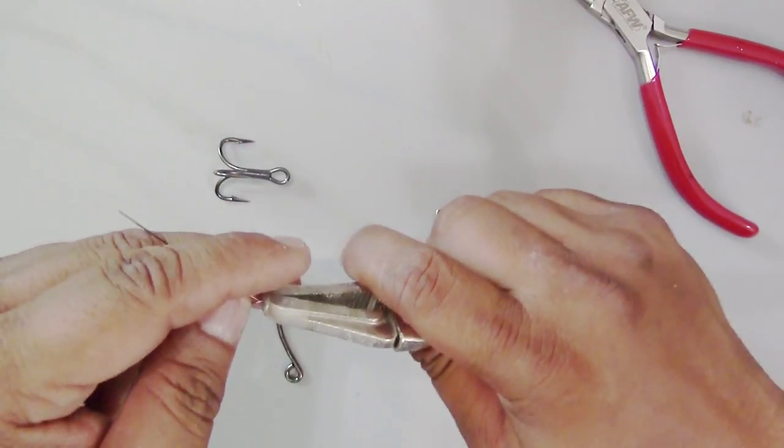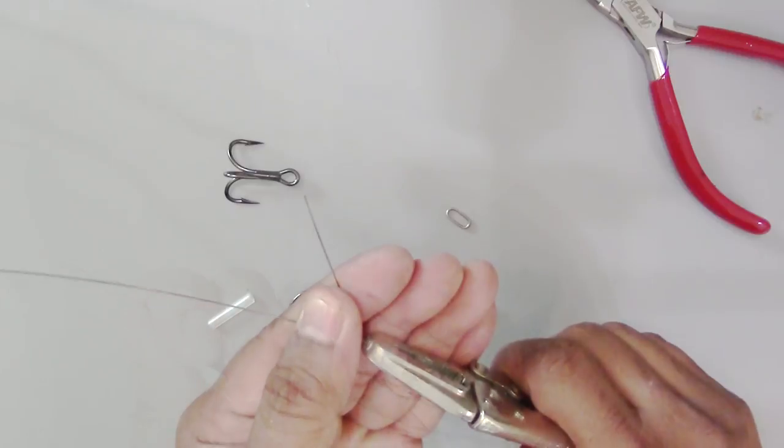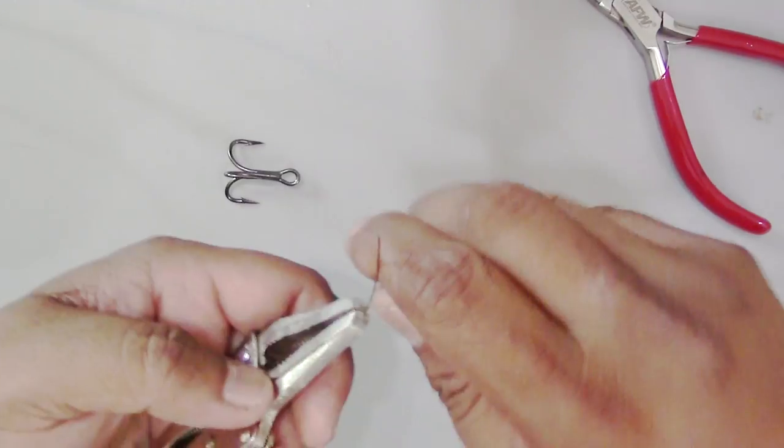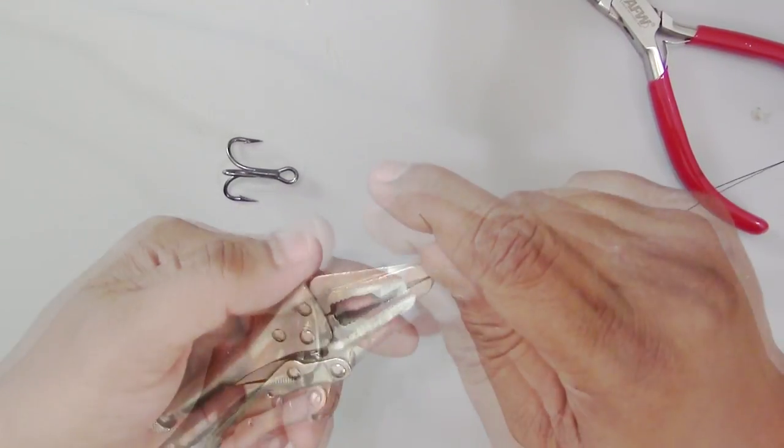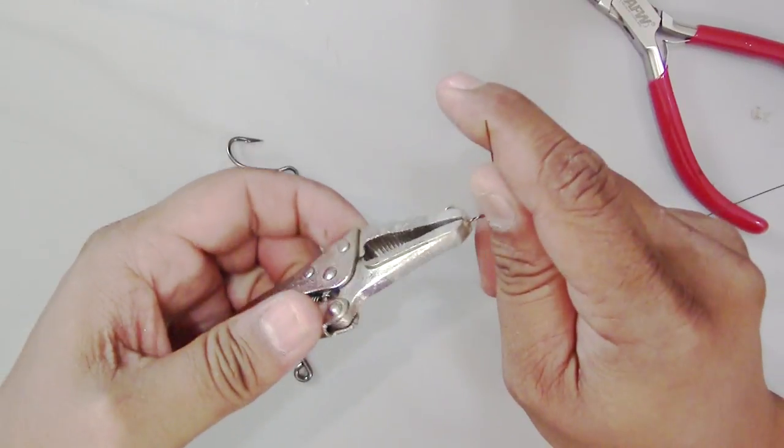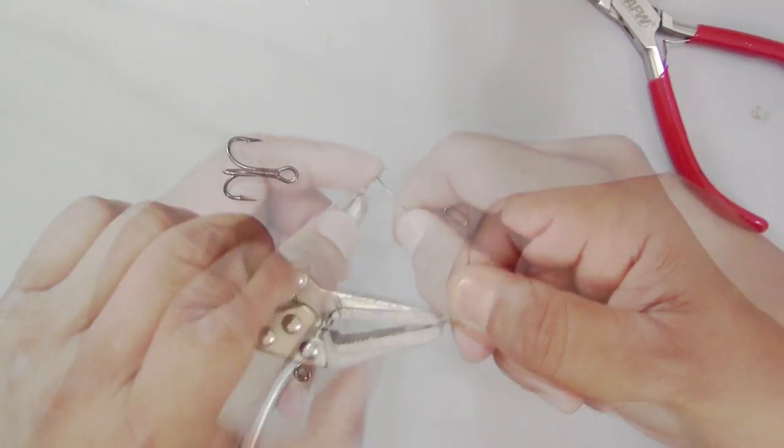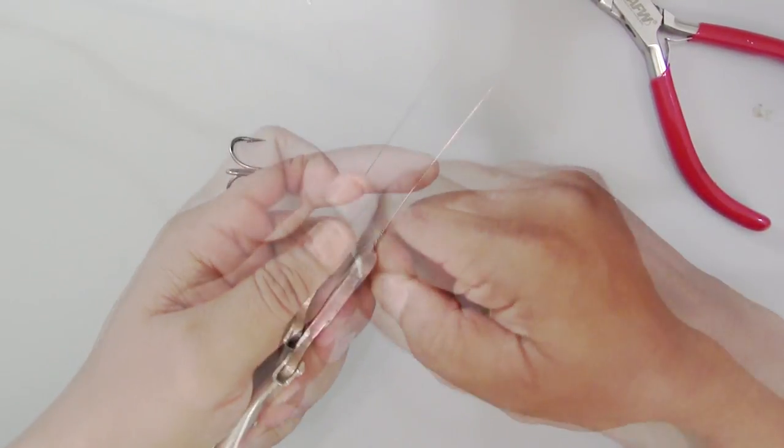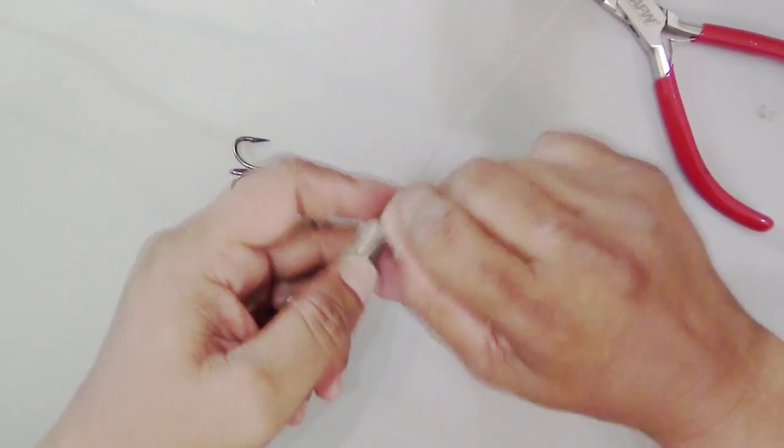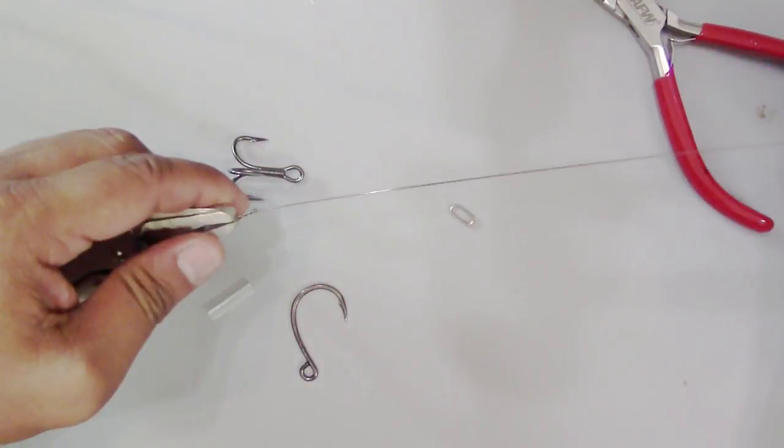From there, we can make our haywire twist, finish it off with a barrel roll, and then twist the tag end off. So you have that.